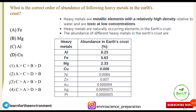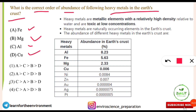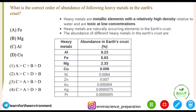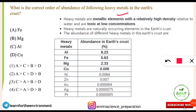A previous UGC NET Environmental Science question asked: what is the correct order of abundance of the following heavy metals in the Earth's crust — iron, magnesium, aluminium, and copper — in decreasing order? If you don't know the abundance of these heavy metals in the Earth's crust, you won't be able to answer. Heavy metals are metallic elements with relatively high density and are toxic even at lower concentrations.